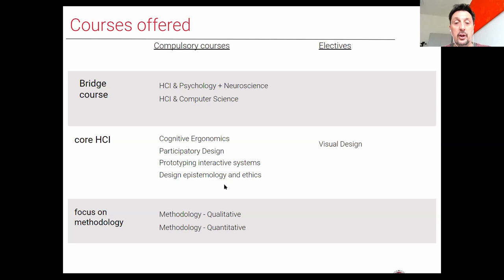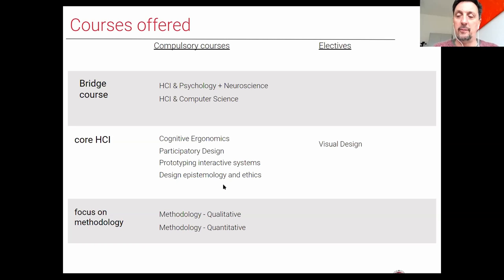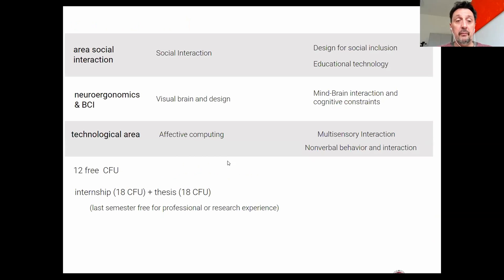This gives everyone a common knowledge base as a starting point. Then we have core HCI courses: Cognitive Economics and Participatory Design — technically a single course but two independent modules — Modelling and Prototyping of Interactive Systems, and Design Epistemology and Ethics. These are compulsory and form the core of HCI. There is also an elective in Visual Design. Then there are two compulsory methodology courses: you must take both qualitative and quantitative methodology, as both are very important in our disciplines.